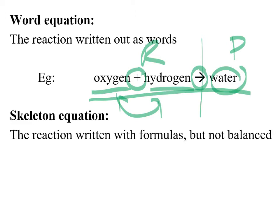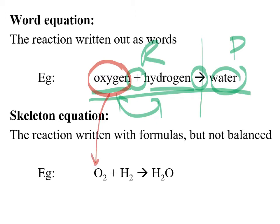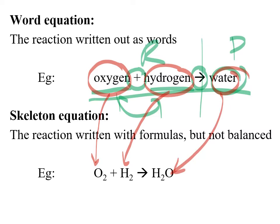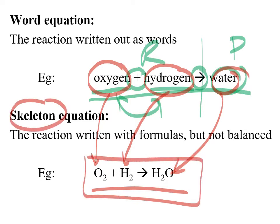A skeleton reaction basically takes this word equation to a halfway useful form, where we write the words out as their chemical formula. You apply your nomenclature skills and turn those names into chemical formulas. You end up with a chemical equation that is unbalanced — also known as a skeleton equation — which you can't leave like that. So you're going to want to balance this equation.